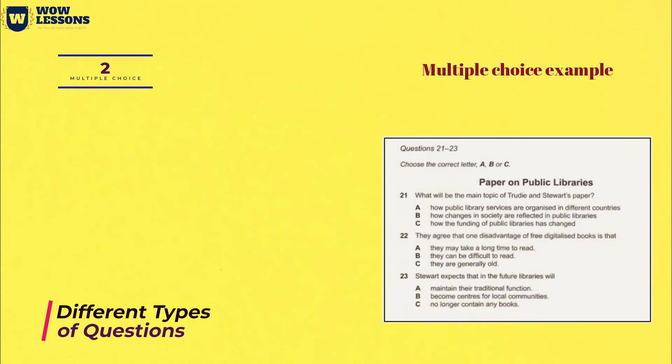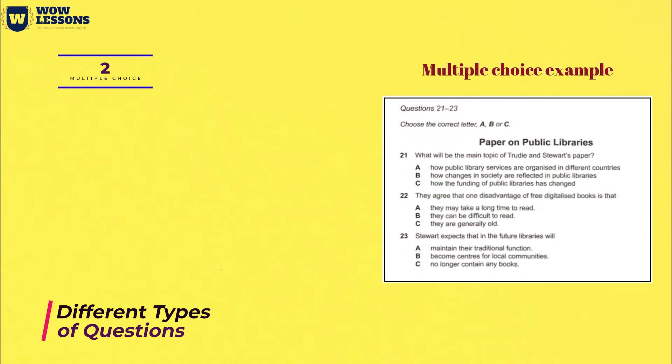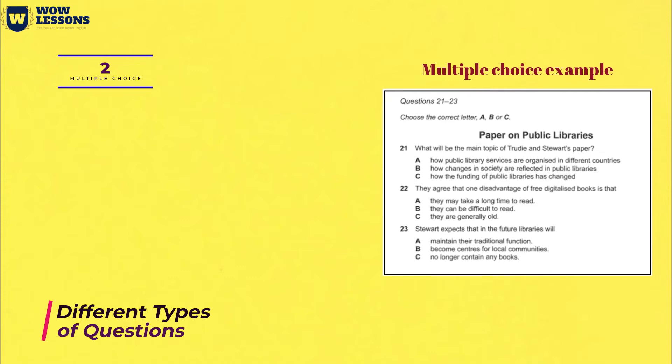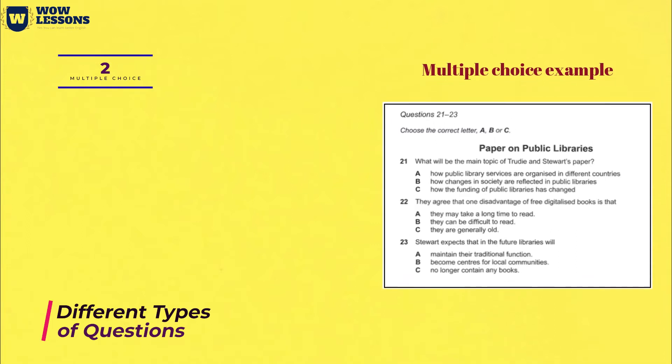Multiple choice assignments are found in almost every test. Usually you will need to choose one answer out of three. But sometimes there are tasks with four or more answer options — in this case, you will be asked to choose several correct answers. When you answer such questions, you need to remember that you must write the letter A, B, or C in the answer form, and not the word. Answers written as words will be considered incorrect.